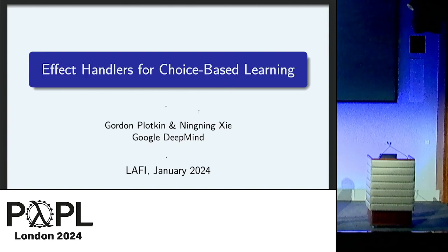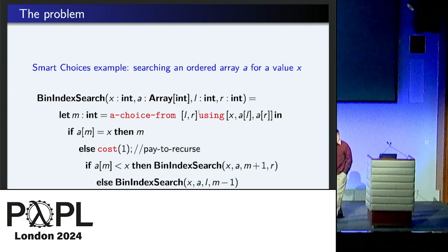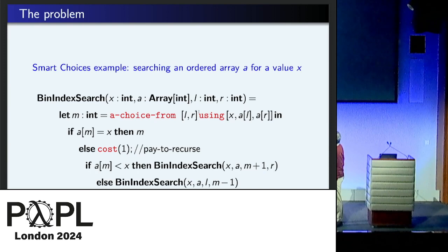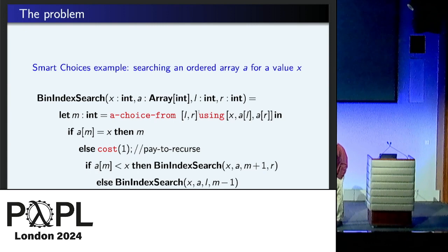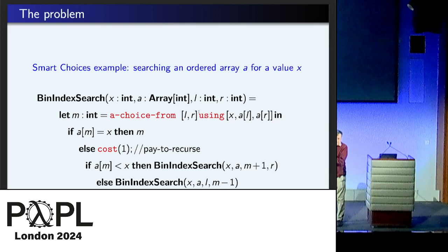So let's have a look at the example. This is from Smart Choices, which was a project system combining programming and machine learning. This is just an example of binary search. We're searching for the place in some array where some element x occurs in array a, and so you want to have a pivot. So the question is, what pivot should you choose?